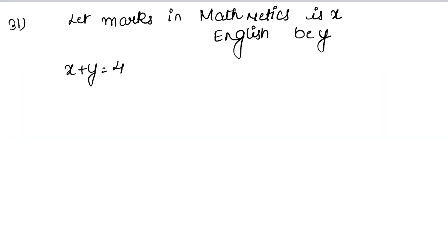He says that if math is 3 marks increased and English is 4 marks decreased, so x plus 3 and y minus 4, their product will be 360.